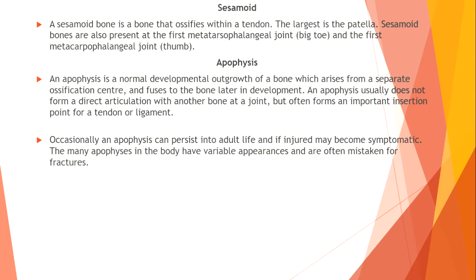Apophysis. An apophysis is a normal developmental outgrowth of a bone which arises from a separate ossification center and fuses to the bone later in development. An apophysis usually does not form a direct articulation with another bone at a joint, but often forms an important insertion point for a tendon or ligament. Occasionally an apophysis can persist into adult life and if injured may become symptomatic.